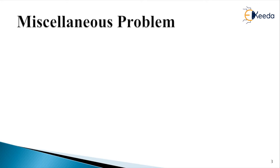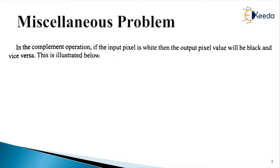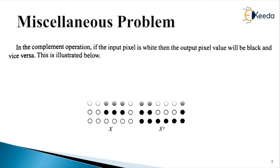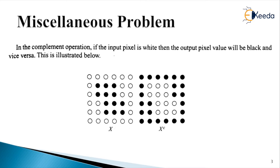In this complement operation, the input image from the given data produces the complement image X^C shown on the right-hand side. Whatever white pixels existed are now completely dark, and the completely dark pixels are now completely white. This is the complement of X denoted by X to the power C, and this is the answer to part one.